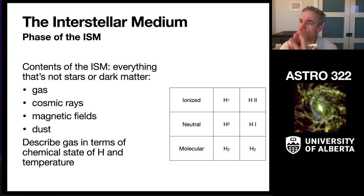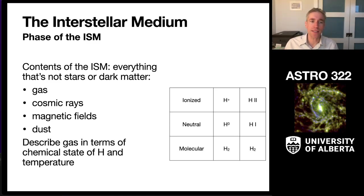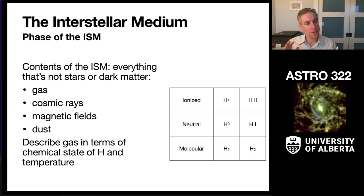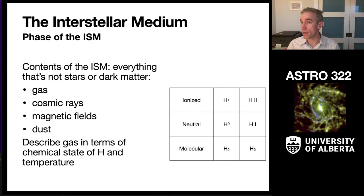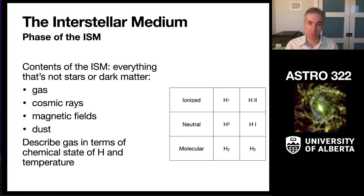But mostly what we care about is the gas. What we're going to be looking at today is really focusing on the chemical state of the matter, described in terms of what hydrogen is doing. So when we talk about the ISM, the vocabulary we use is just what is the chemistry of hydrogen — is it ionized, neutral, or molecular?